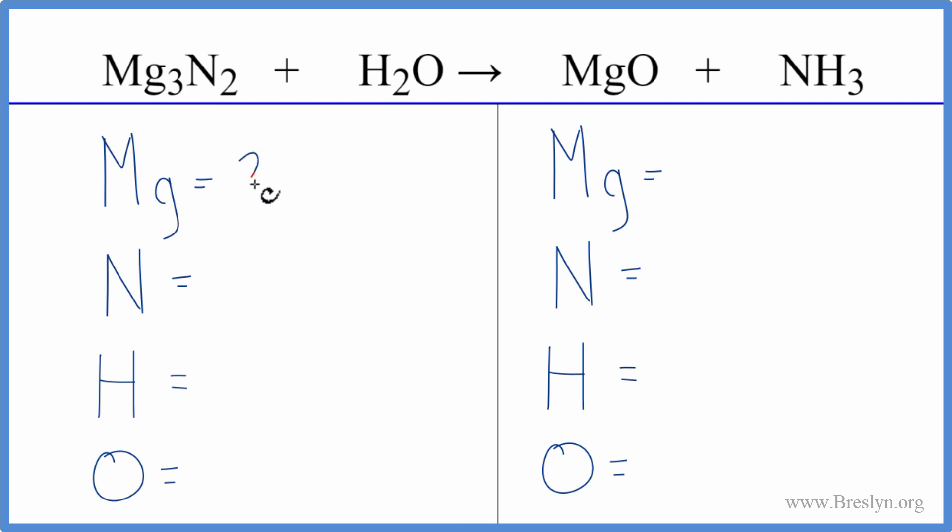We have three magnesium atoms, two nitrogen, two hydrogen, and one oxygen. On the product side, we have one Mg, one nitrogen, three hydrogens, and one oxygen.